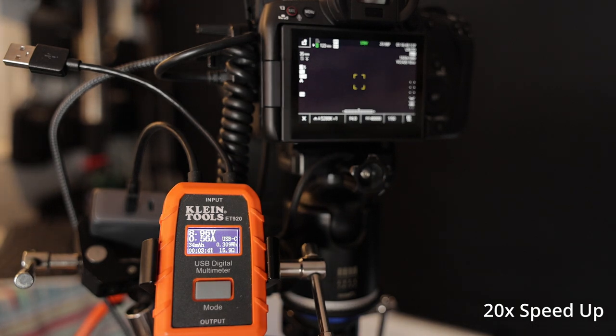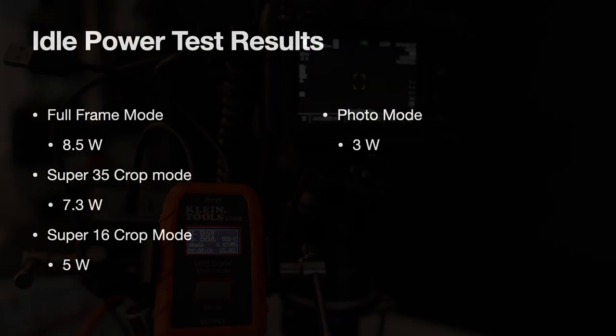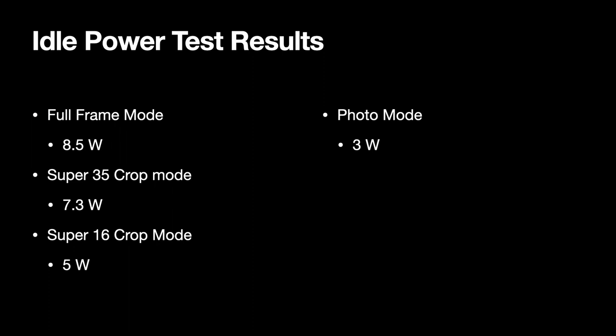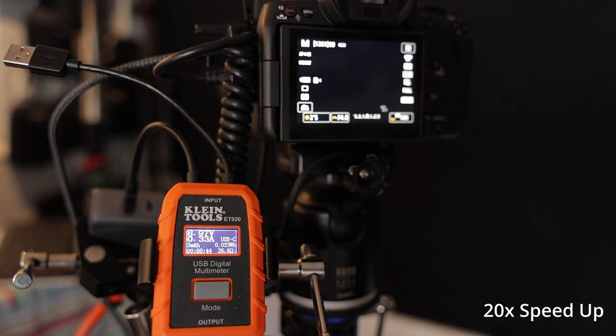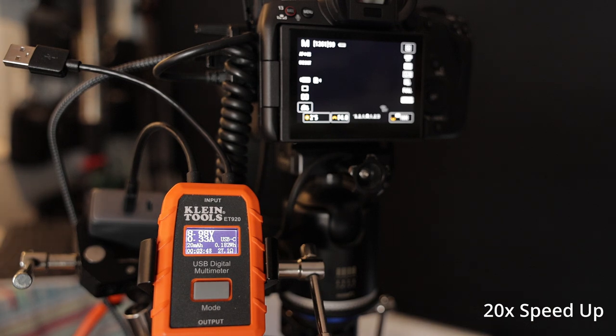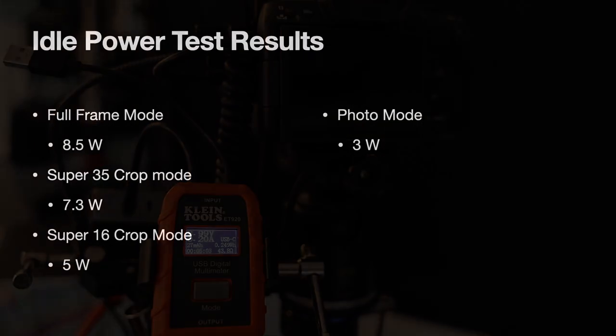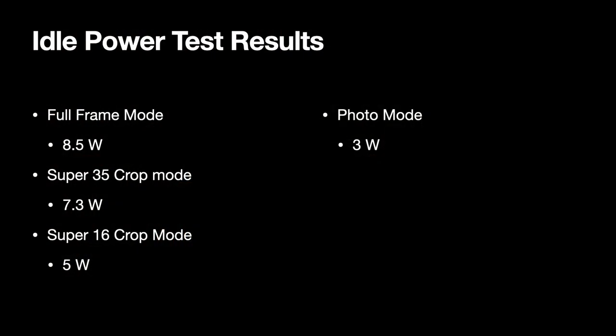With the R5C idling in full frame mode, I saw an average power consumption of 8.5 watts. Stepping down to Super 35 mode dropped power usage to 7.3 watts, and dropping to Super 16 crop mode dropped it to just 5 watts. Flipping to photo mode showed an idle power consumption of about 3 watts — the same as I've measured on my R5 running firmware 1.5.2. So idle power in photo mode appears identical to the R5, but in video mode it draws significantly more.